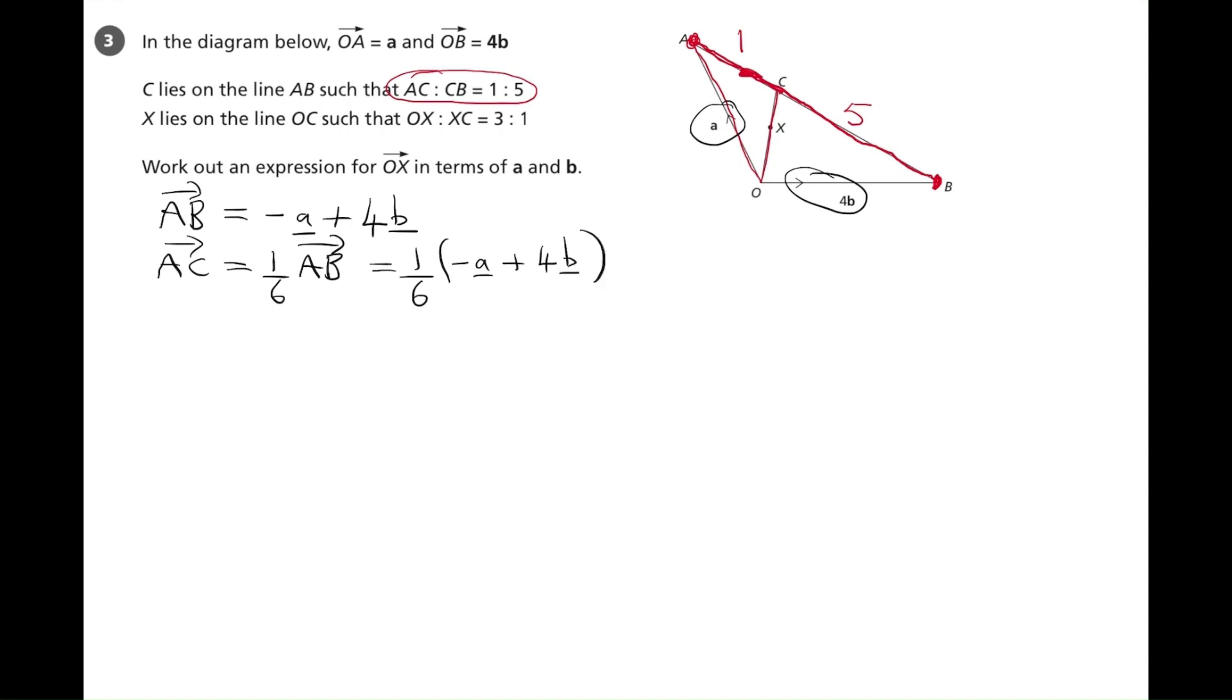Now that we know AC, we can look at working out OC. So if we look at the diagram, to go from O to C, we're going to go along to A, which is little vector a, and then down AC. So the vector OC is equal to vector OA plus AC, and that is little vector a plus one sixth of minus a plus 4b.